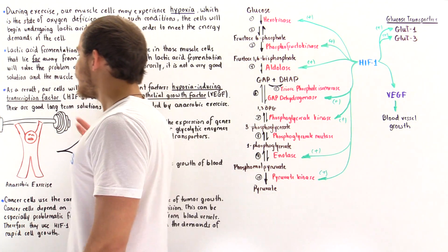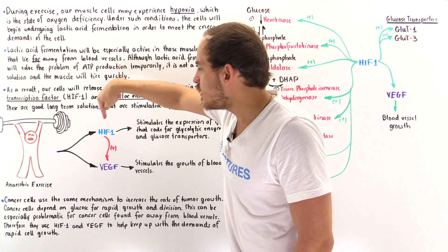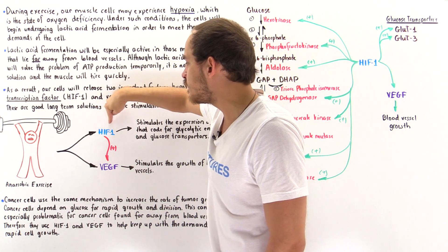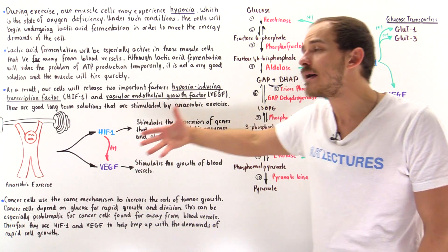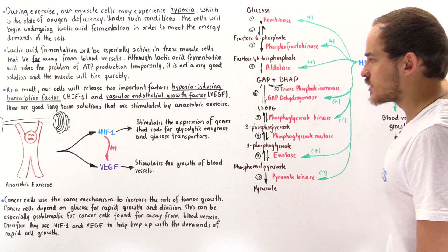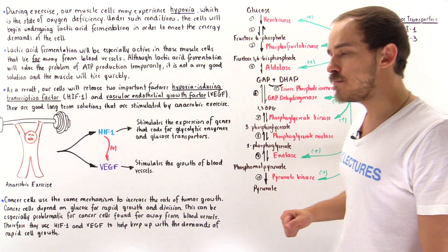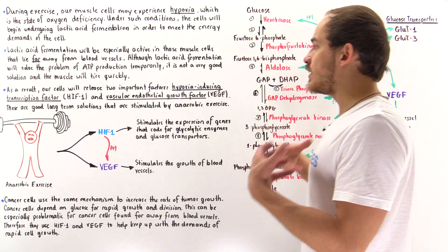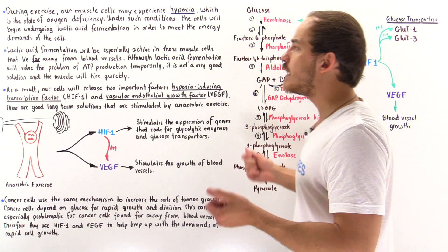So, if we continually exercise, anaerobic exercise stimulates the release of HIF1 — the hypoxia-inducing transcription factor 1 — which stimulates the expression of genes coding for proteins and enzymes involved in glycolysis and also codes for glucose transporters. On top of that, it also stimulates VEGF to stimulate the growth of blood vessels. This ultimately increases our endurance and allows us to carry out exercise much more effectively and efficiently.